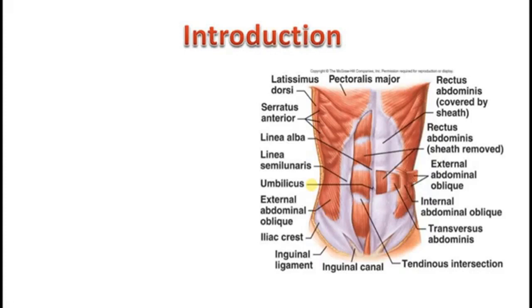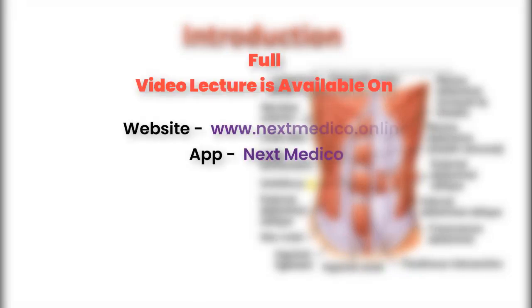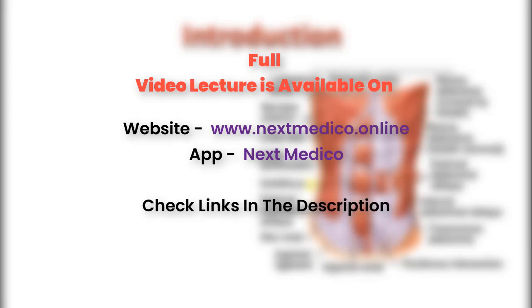Now, what is a rectus sheath? We would have actually known about the sheath — the fascial sheath. The fascia actually forms a sheath around the muscles. Now, this is also a sheath which is covering the muscle.